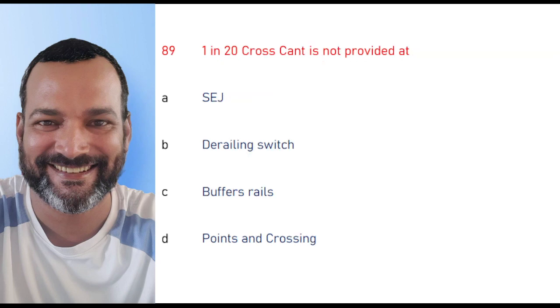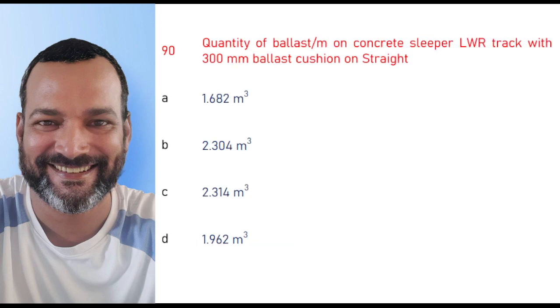1 in 20 cross cant is not provided at ACJ drilling, switch buffer rails, point and crossing. The right option is point and crossing.